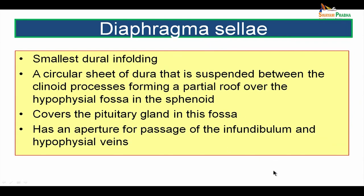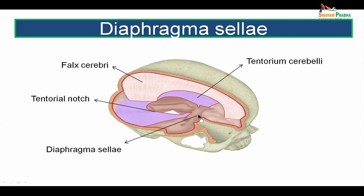The fourth dural infolding is the diaphragma sellae — the smallest of the dural infoldings. It is a circular sheet of dura suspended between the clinoid processes, forming a partial roof over the hypophysial fossa of the sphenoid bone. It covers the pituitary gland in this fossa and has an aperture for passage of the infundibulum and the hypophysial veins.